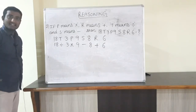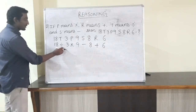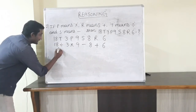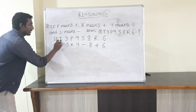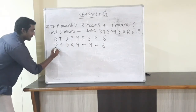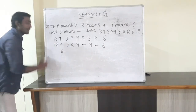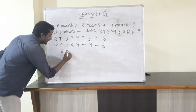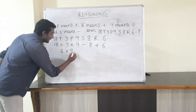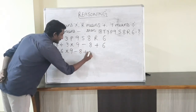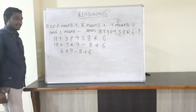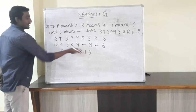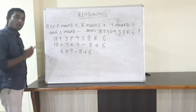Now by using BODMAS rule, first calculate the division. 18 divided by 3 equals 6. The remaining terms are: 6 into 9 minus 8 plus 6. We have three symbols: into, minus, and plus.